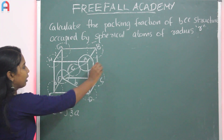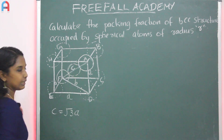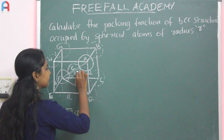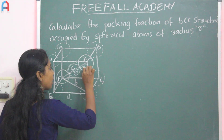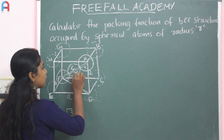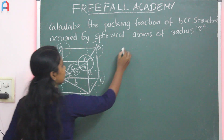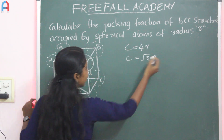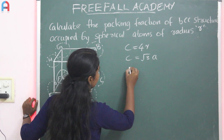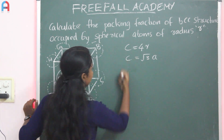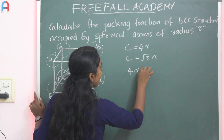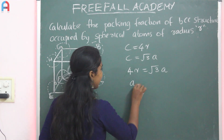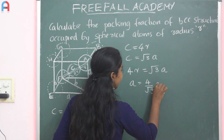Along the body diagonal, considering the radius of atoms: there is R plus 2R plus R, which equals 4R. So C equals 4R. Since C also equals root 3 times A, we get 4R equals root 3 times A, and therefore A equals 4R divided by root 3.